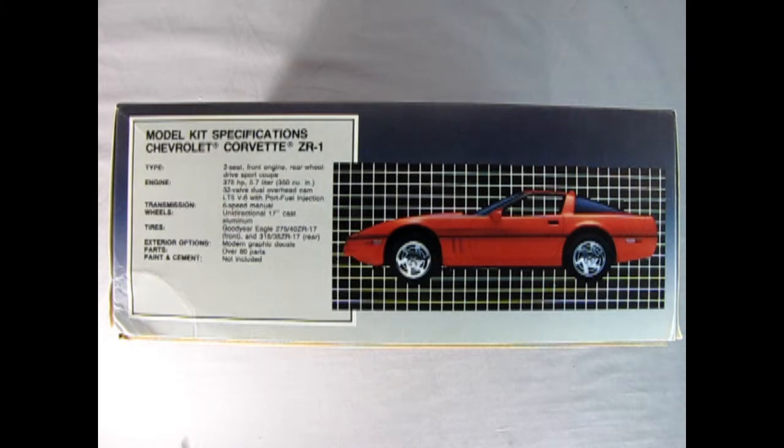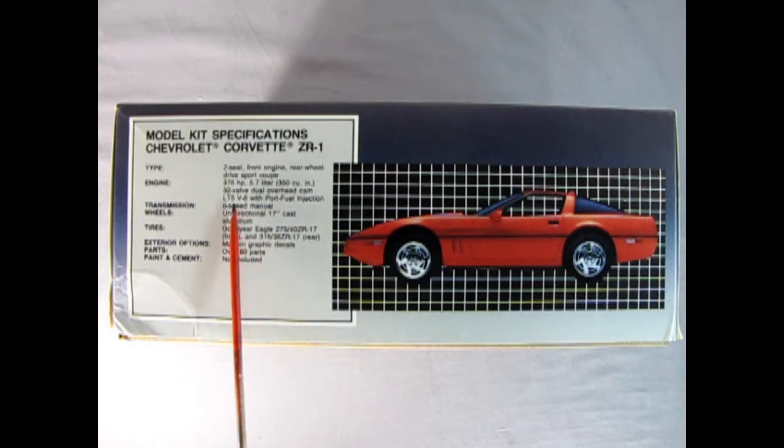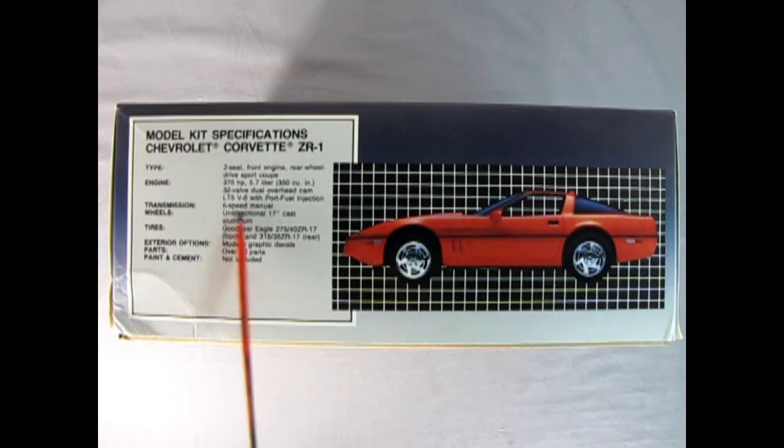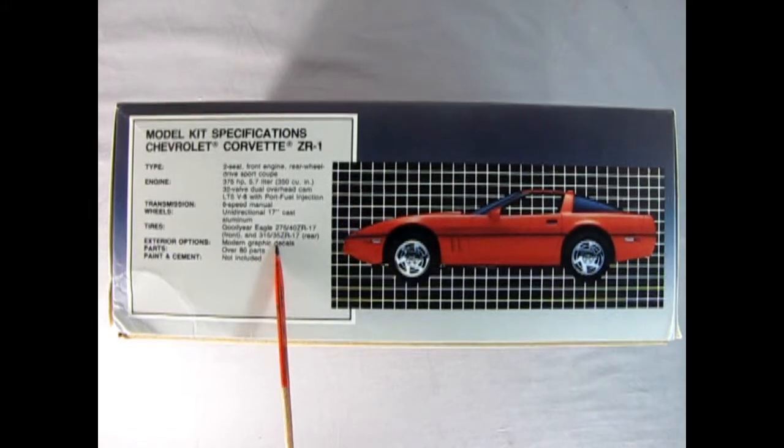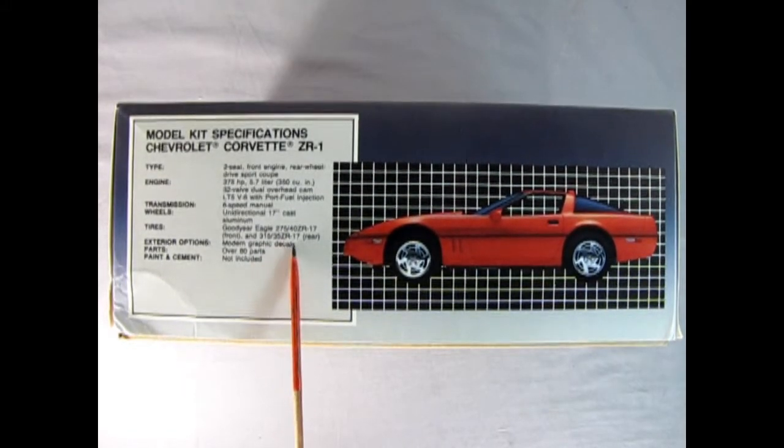On this side of the box we read all the statistics of our ZR1 Corvette. It's a two seat front engine rear wheel drive sports coupe. 375 horsepower 5.7 liter 350 cubic inch engine, 32 valves. This one was also engineered with Lotus, 32 valve dual overhead cam LT5 V8 with port fuel injection and a six-speed manual transmission. Unidirectional 17 inch cast aluminum wheels. Tires are Goodyear Eagles, 275/40 ZR17s in the front and 315/35 ZR17s in the rear.